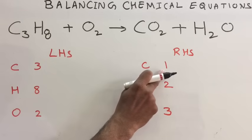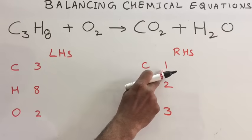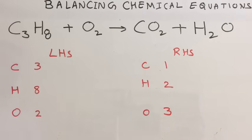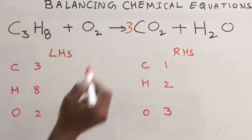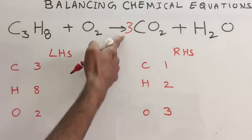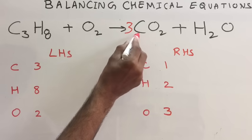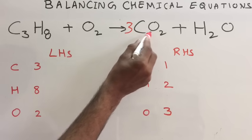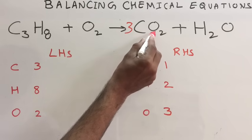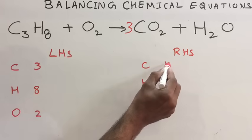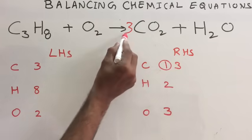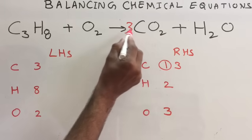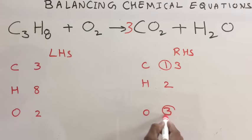On LHS you have three carbons, on RHS you have one carbon, so carbon must be made three. To make this carbon three, simply multiply with three. If you multiply with three, it applies to C as well as to oxygen, so the new carbon number is three and the new oxygen number is three twos, which is six.